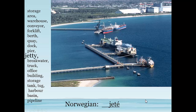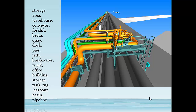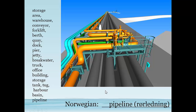A jetty is a pier-like structure that has pipelines used to load and unload liquid bulk cargo. In Norwegian, I'm not quite sure what you call a jetty — I'm not teaching maritime Norwegian, I'm teaching maritime English. Here's another view looking at a jetty down the long view, and we can see these pipes linked all together create a pipeline. In Norwegian, pipeline or just «rørledning». So it's a pier-like structure with a pipeline — we call a jetty.